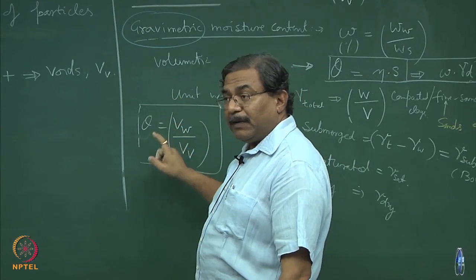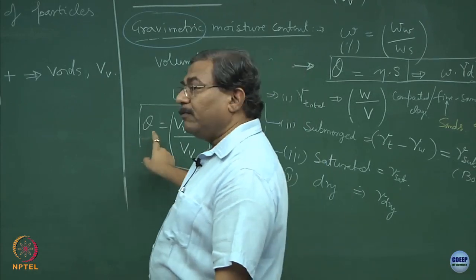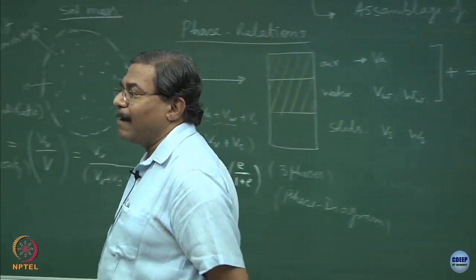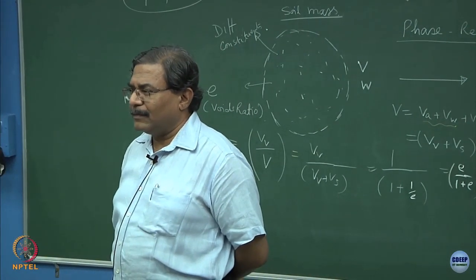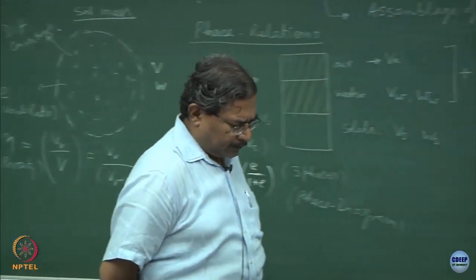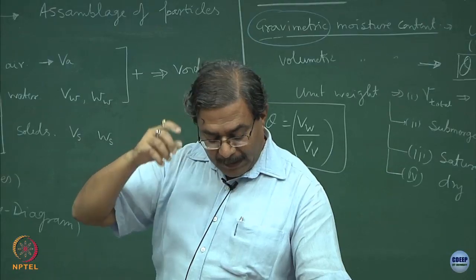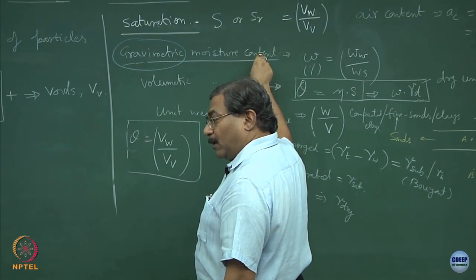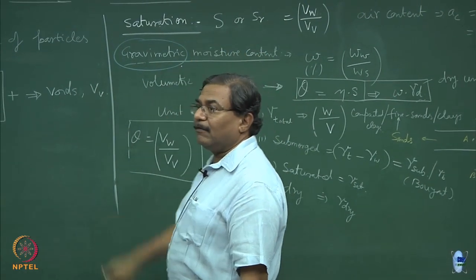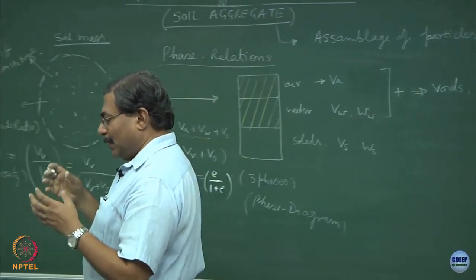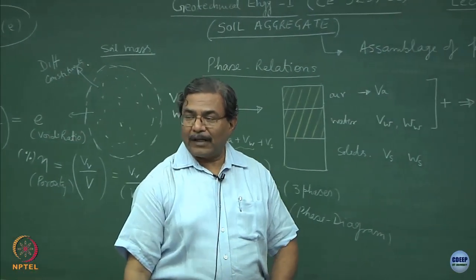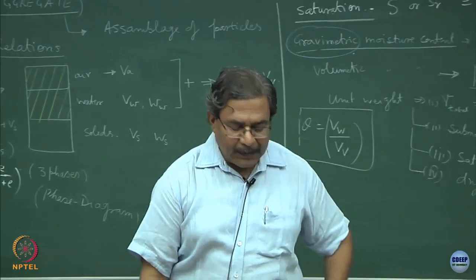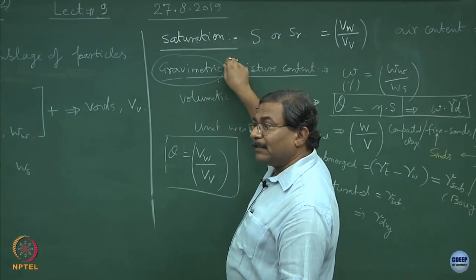The reason people are not adopting gravimetric methods is that soils have organic matter, and exposure to high temperatures loses organic content, making results wrong. Please make corrections: theta equals gamma W upon gamma D multiplied by gravimetric moisture content. Now let us go into the gammas.